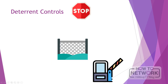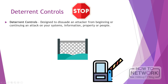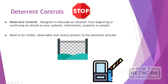Deterrent controls are designed to dissuade an attacker from beginning or continuing an attack on your systems, information, property, or people. The goal of having deterrent controls in place is to raise the cost of an attack or level of risk an attacker would have to undertake. An example of a deterrent control would be having a guard patrol the perimeter of your property. Deterrent controls need to be visible, observable, and clearly present to the potential attacker in order for them to work. The objective is to essentially scare the attacker away from attempting an attack.